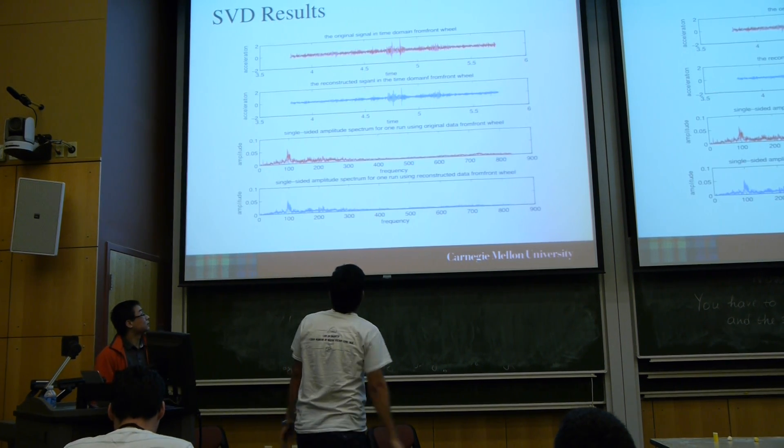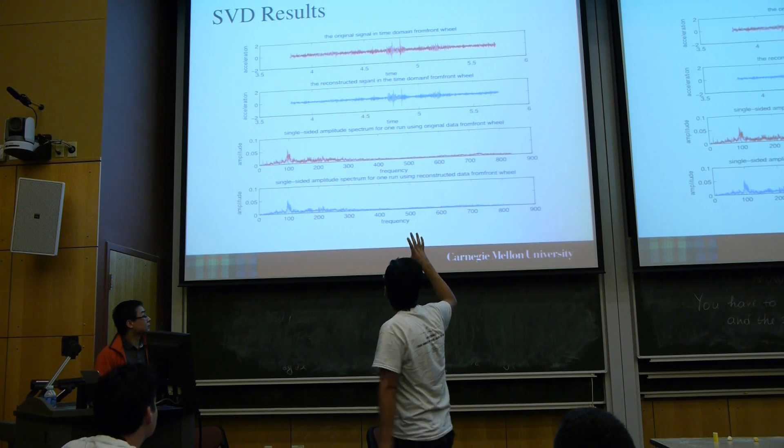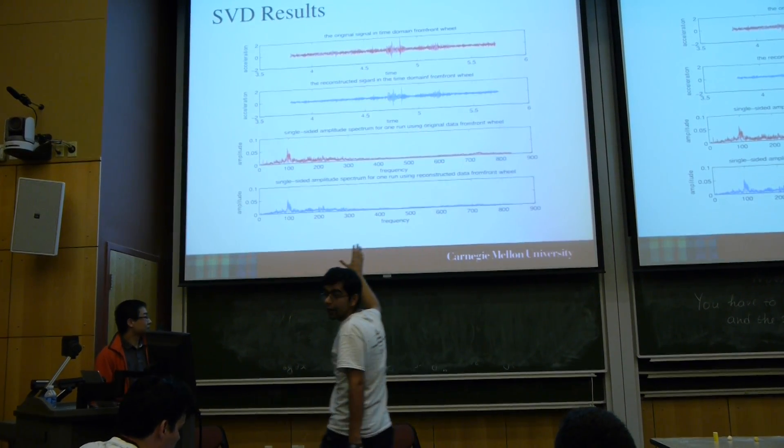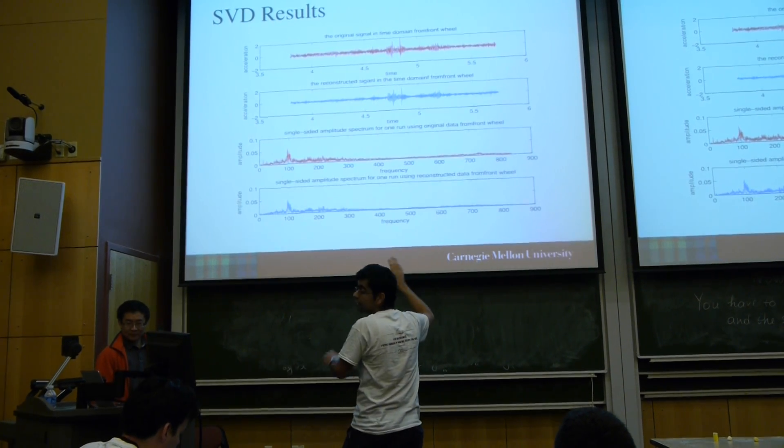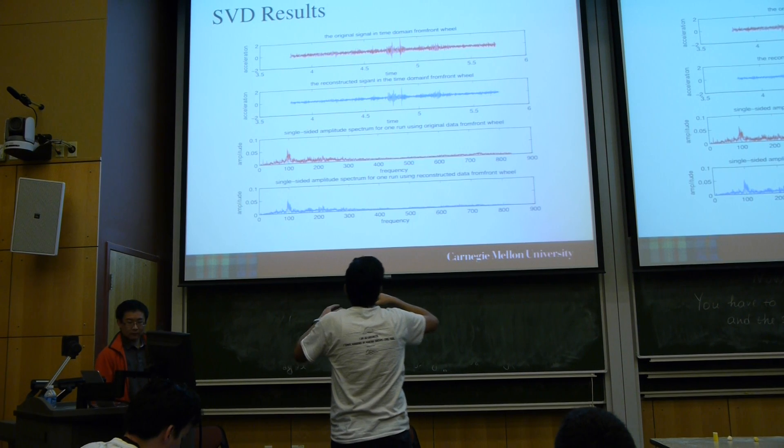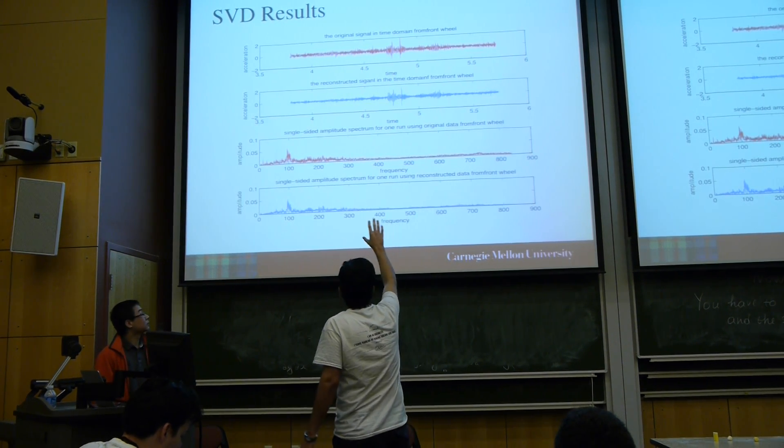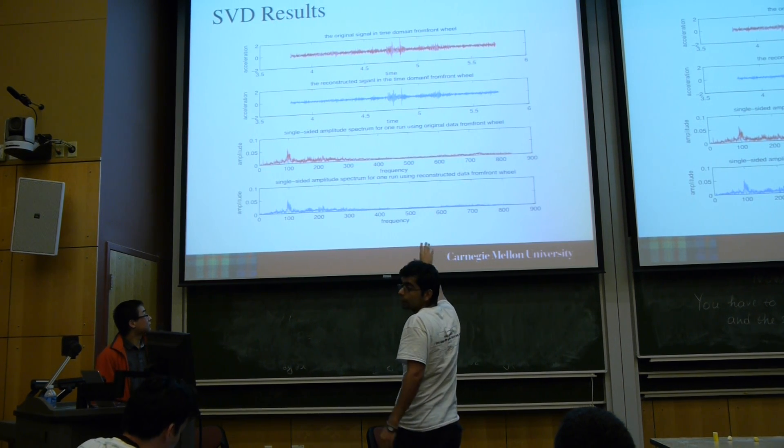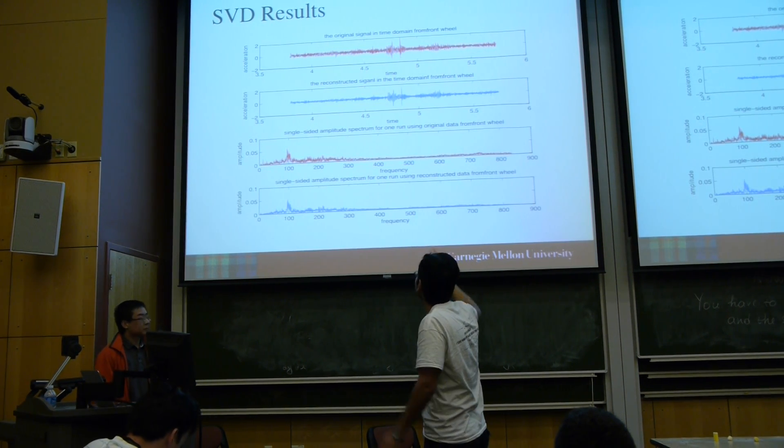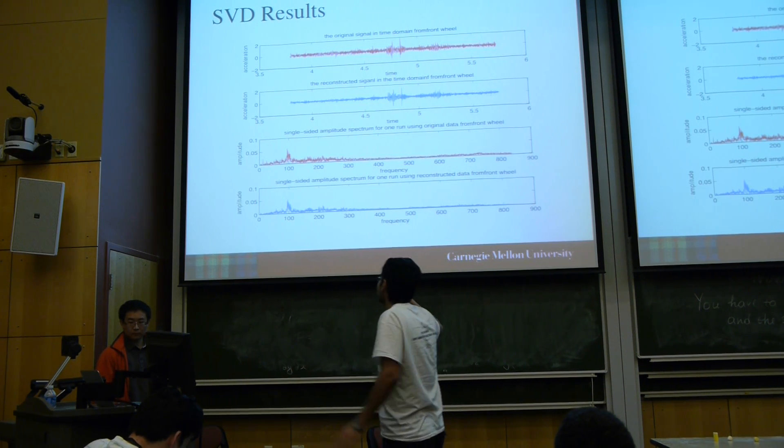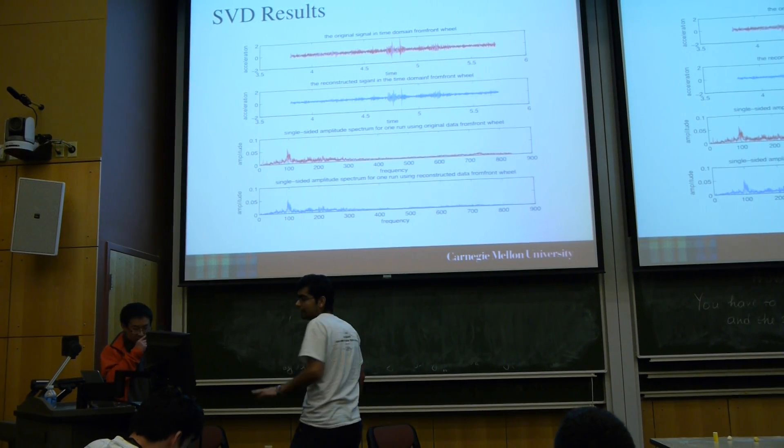In this slide, you see the red graphs are for the original data and the blue graphs are for the reconstructed data using just the first feature. You will see very good consistency in both. The two above are for time domain, and the two bottom are for frequency domain. You will see consistency in both frequency domain and time domain. In frequency domain, it is a little better.